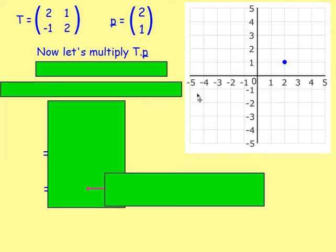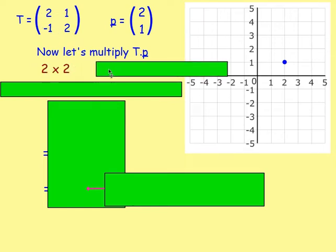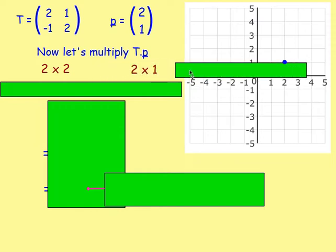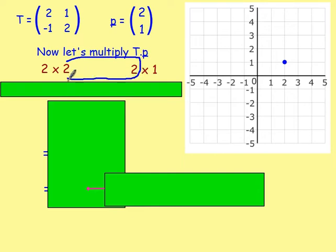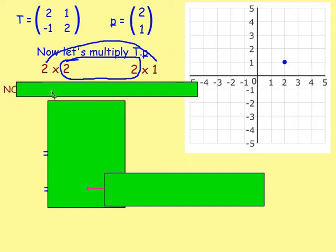Can we do that? First of all, remember, you always need to do that check. T is a 2 by 2 matrix, and P is a 2 by 1 matrix. You always need to check that the numbers in the middle are the same. They are, so we can multiply them together. The resulting matrix will be a 2 by 1 matrix.